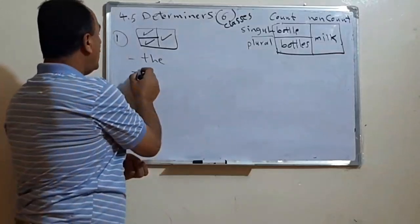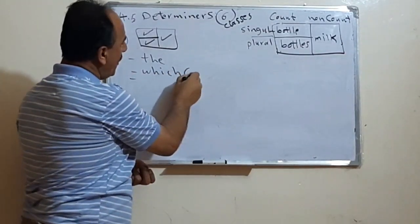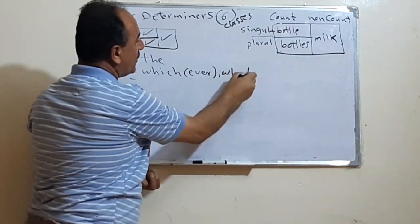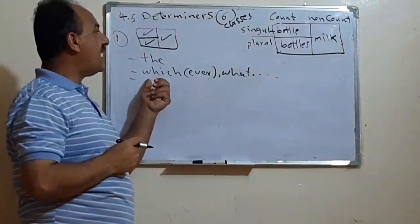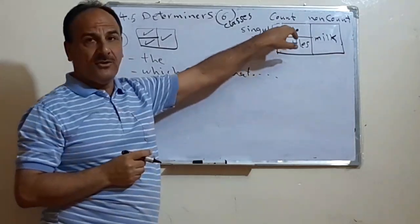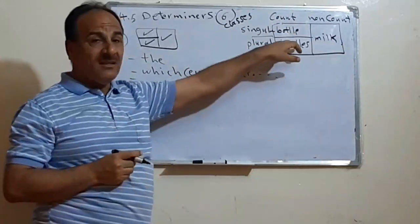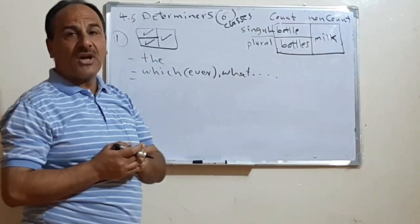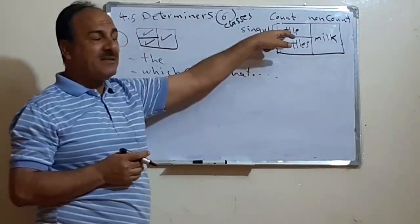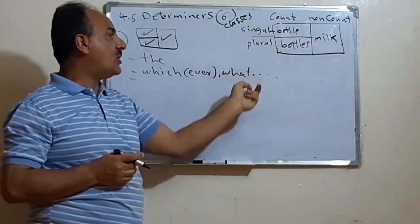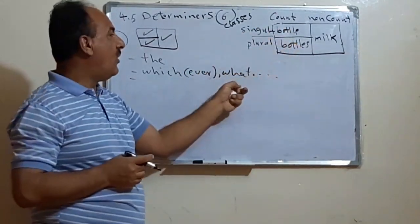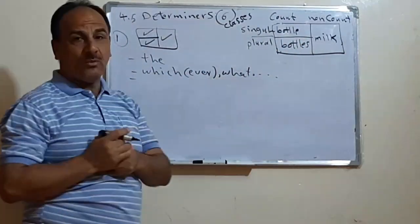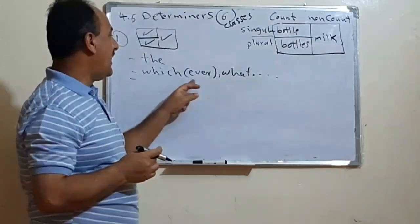The second word in this category is 'which', 'whichever', 'what', 'whatever', etc. We can say 'which bottle do you prefer?', 'which bottles do you prefer?', 'which furniture?', or 'which milk did you drink?' So 'which' and 'what' can also precede all noun types.